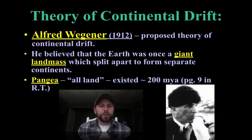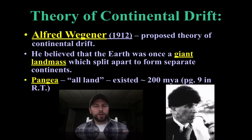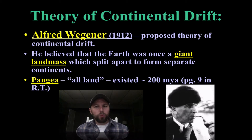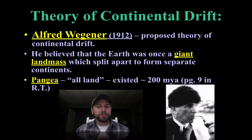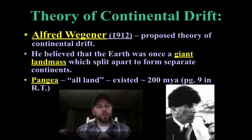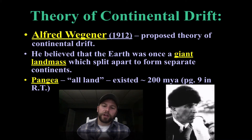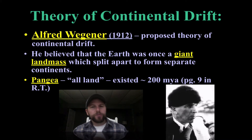Alfred Wegener proposed the theory of continental drift. He believed that all of the earth's continents were at one point a single supercontinent, and eventually split apart to form the continents we have now. That supercontinent he called Pangea, which means 'all land' — found on page 9 of your earth science reference table — and it was formed about 200 million years ago.